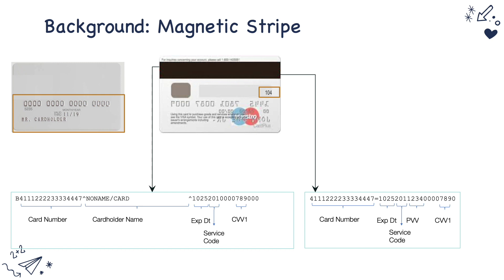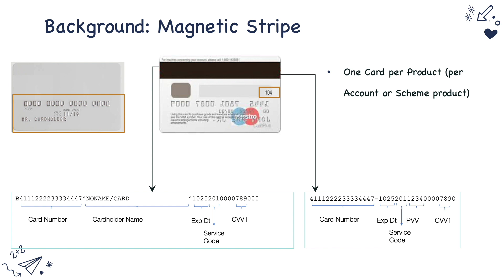Let's do a quick summary of mag stripe cards so that we understand the benefits of EMV. The data stored in a mag stripe card includes what we see on the card and what we store in the magnetic stripe: the card number, cardholder name, expiry date, service code, CVV1, and optionally PVV data. Some of this information is repeated on the card — the card number, name, expiry date, and CVV2. If a customer has two products with a bank, say a Maestro debit card and a Visa credit card, the bank would issue two separate cards. The data that can be stored on the magnetic stripe is also very minimal.